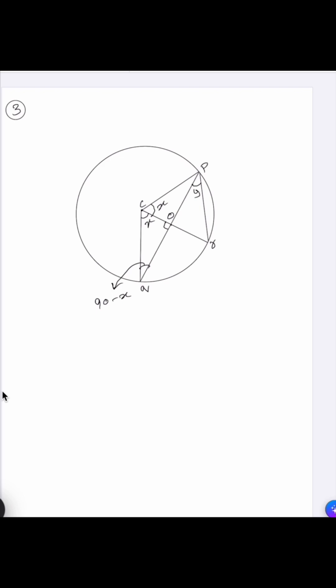Now consider triangle CPR as it is also an isosceles triangle because CP is equal to CR. Angle CPR is equal to angle CRP, so that is equal to 90 minus x by 2.